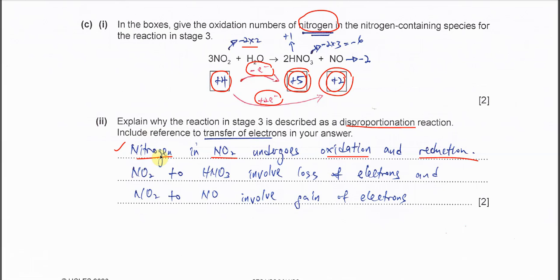Why the nitrogen undergoes oxidation and reduction based on electron transfer: NO2 to HNO3 involves loss of one electron.